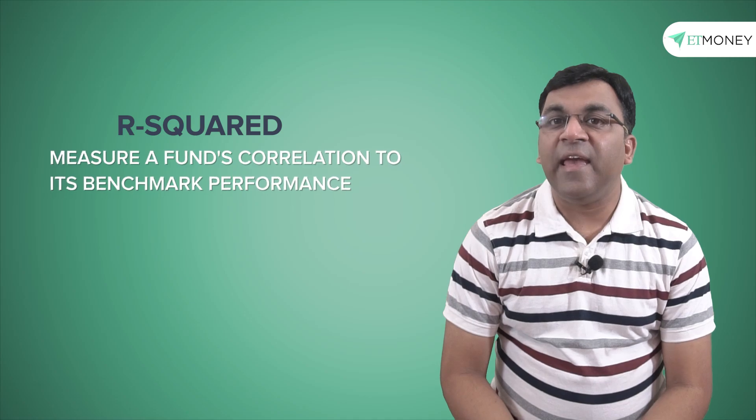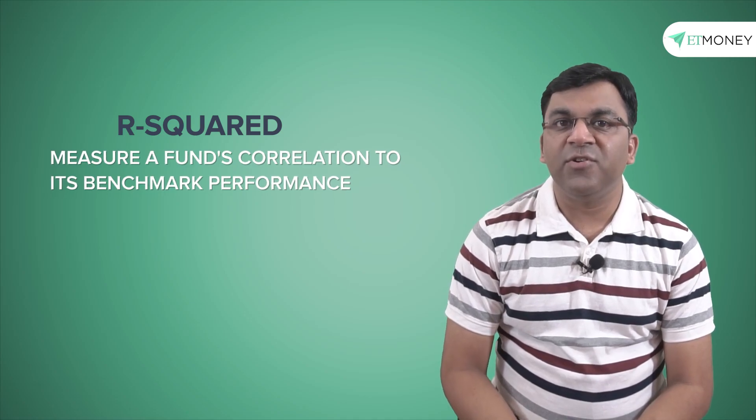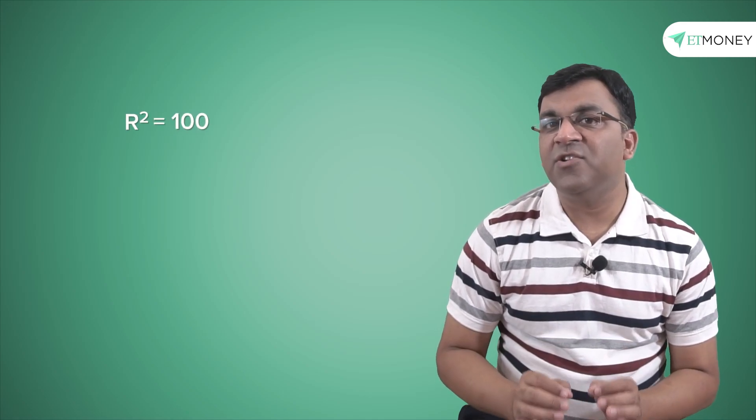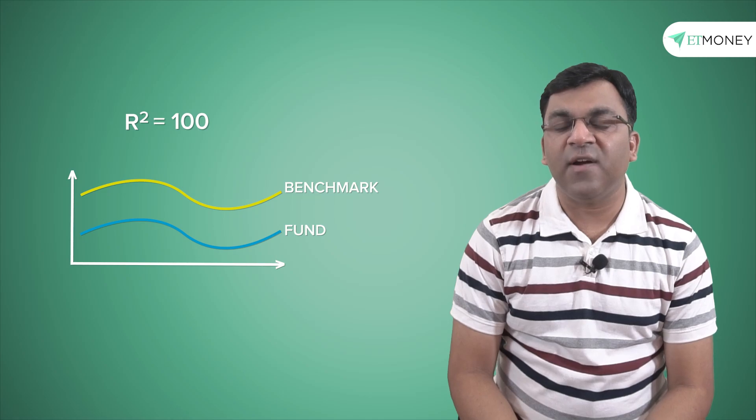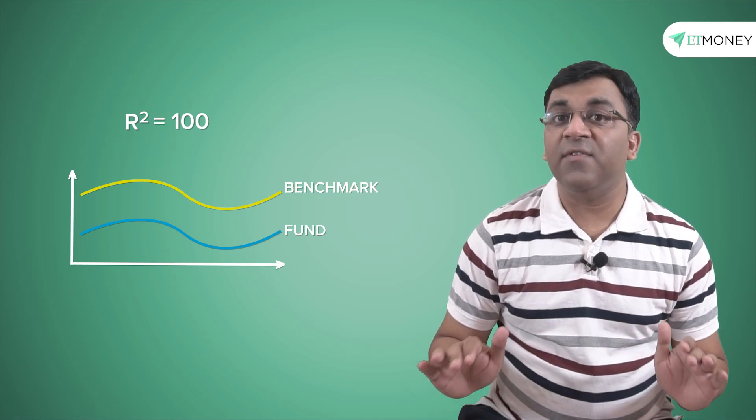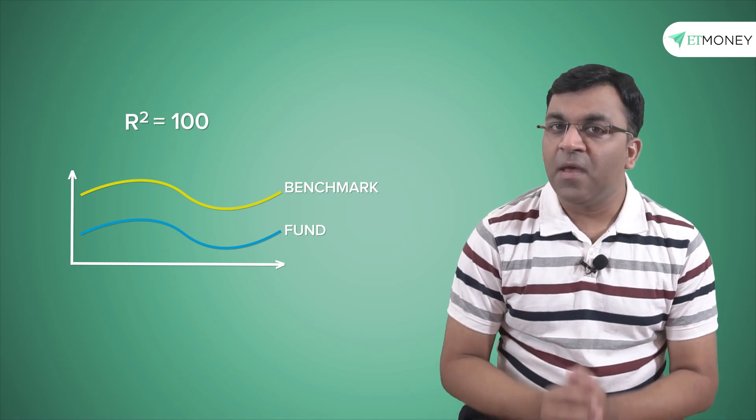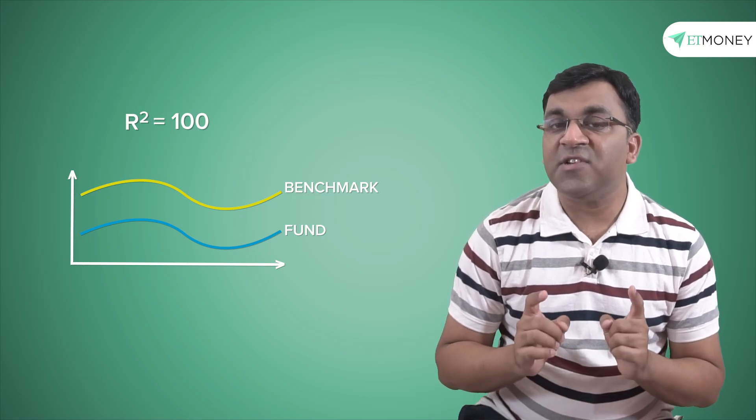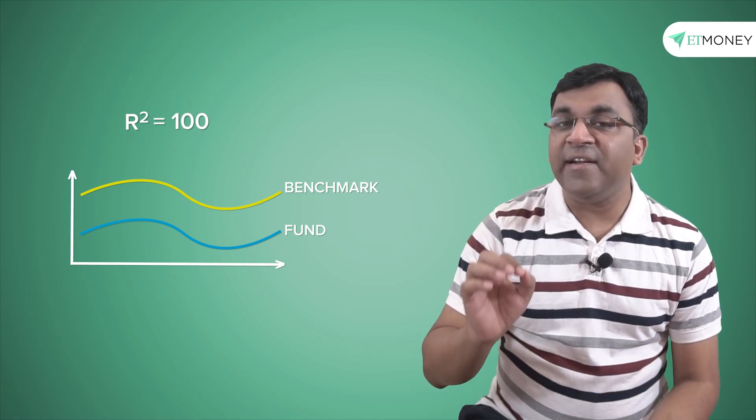The R-squared aims to measure a fund's correlation to its benchmark performance. This is done on a scale of 100, which means if the R-squared is 100, then it shows that the performance of the mutual fund is perfectly correlated with the performance of the benchmark. This is particularly the case when it comes to index funds which have an R-squared of 99 or 100.